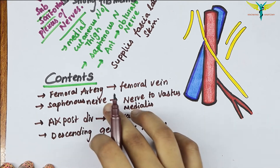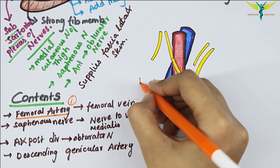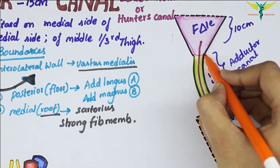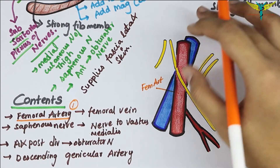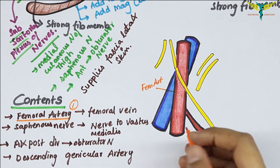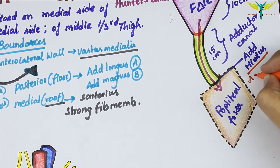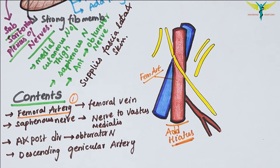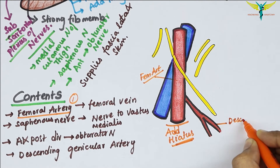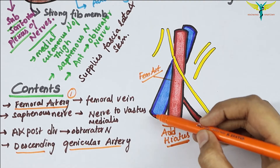The femoral artery enters the canal at the apex of the femoral triangle, traverses the whole length of the adductor canal, and leaves the canal by passing through the tendinous opening in the adductor magnus muscle — the adductor hiatus. Within the canal, the femoral artery gives off muscular branches and a descending genicular branch, which arises just before the femoral artery leaves the canal.